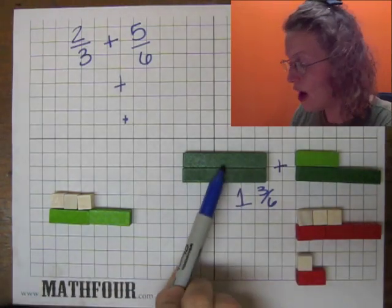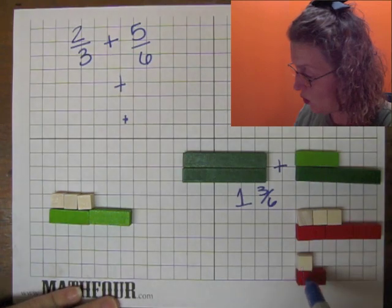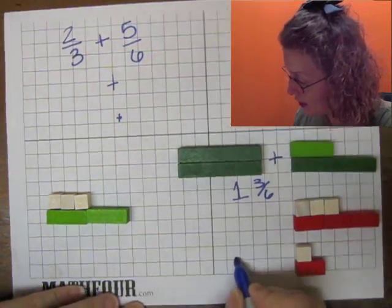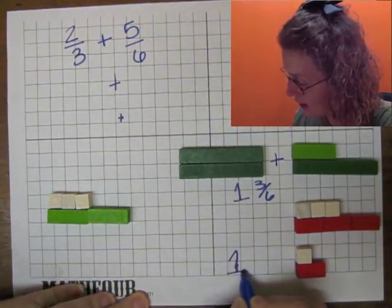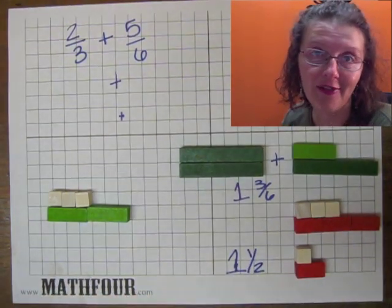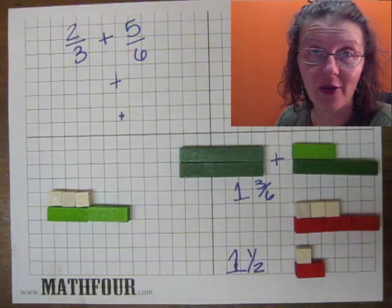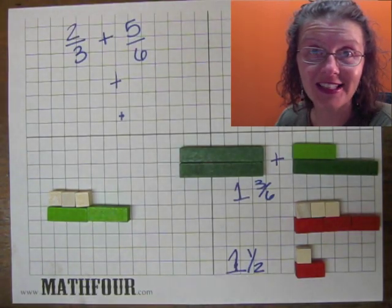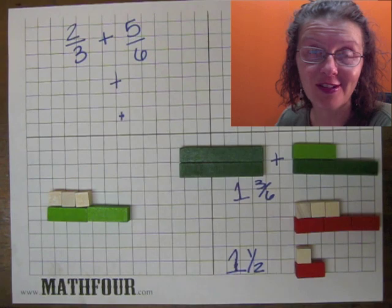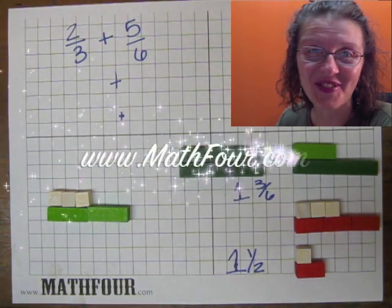So when we had one and three sixths, the three sixths is now one half. So our final answer is one and one half. So that's how to add fractions using Cuisenaire rods. I hope you enjoyed it. And I am over and out. This is Bon Crowder with Math4.com reminding you that math is not a four letter word.